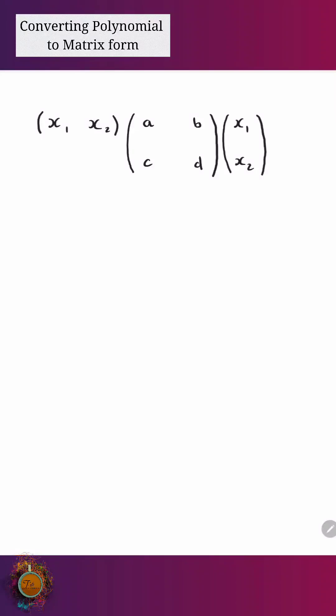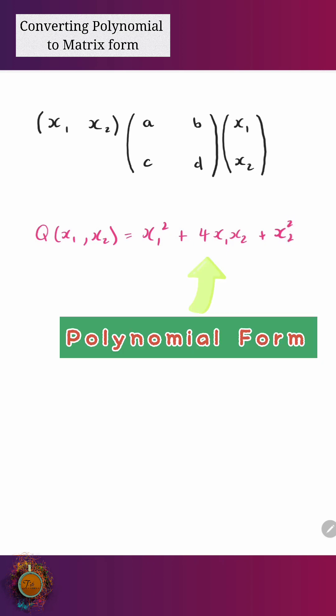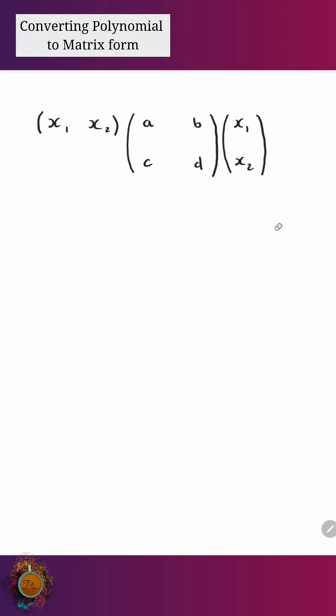Sometimes we may want to write a polynomial function, something like q of x1 x2, which is in the form of x1 squared plus four lots of x1 x2. This might be called an interaction effect here plus some amount of the x2 squared. So it's a polynomial form, quadratic.